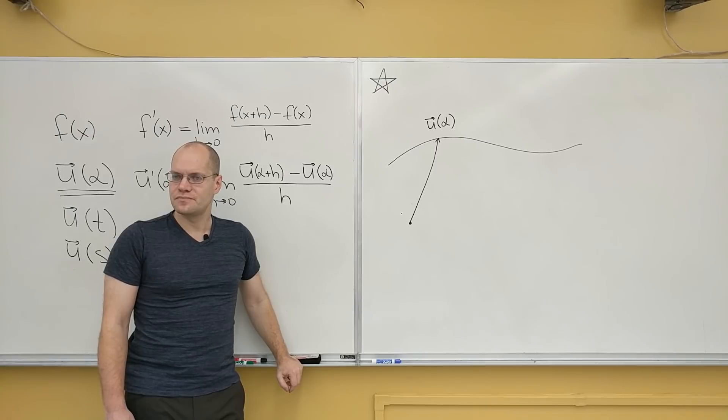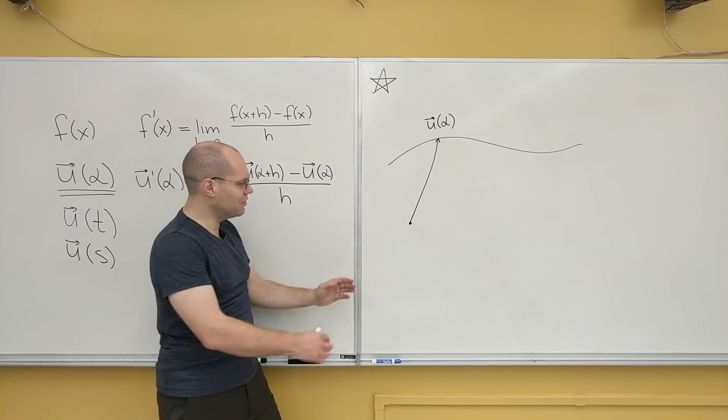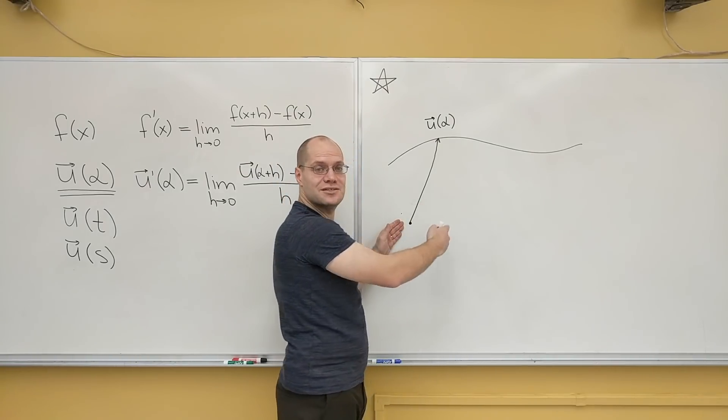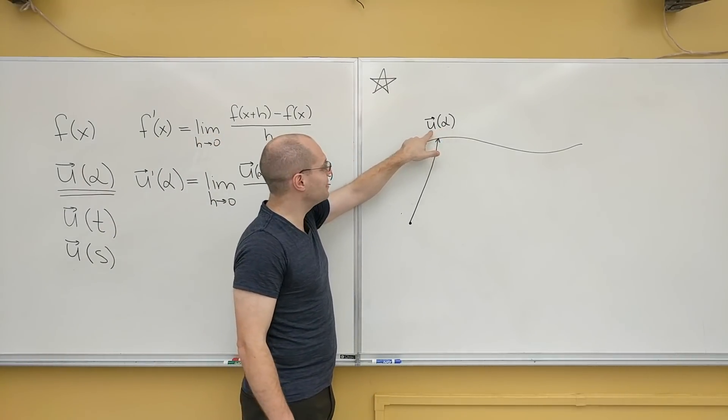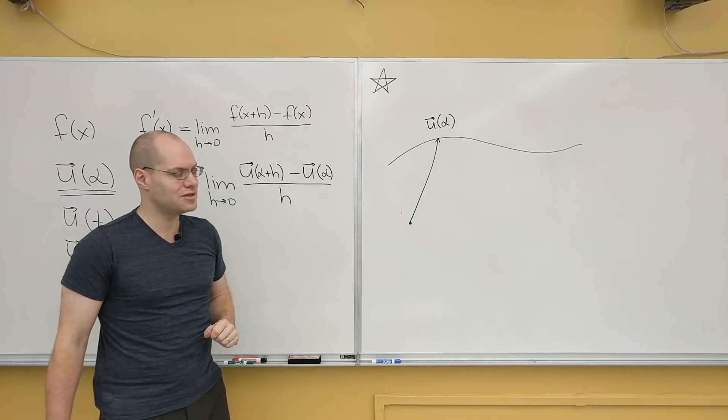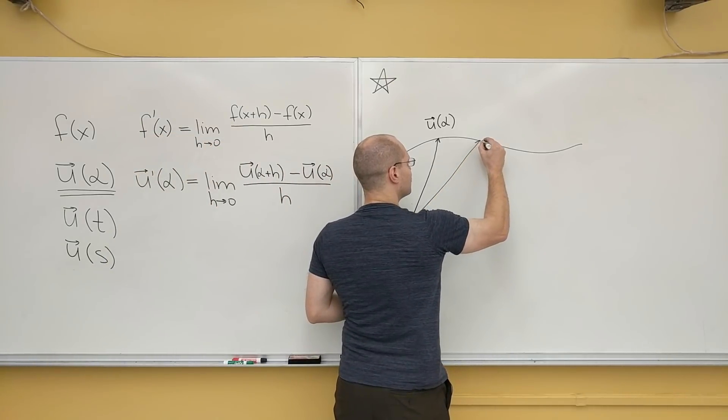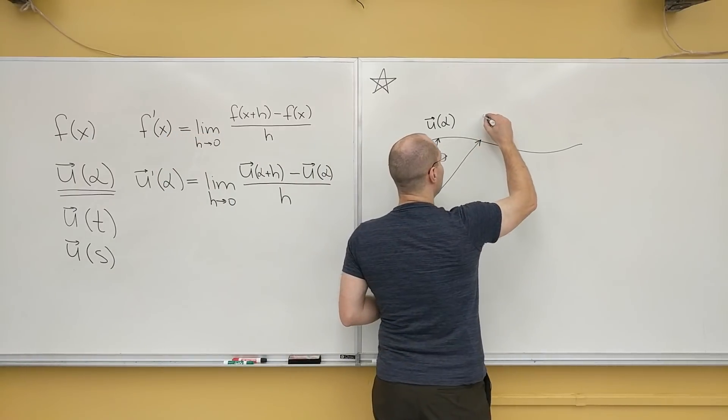Position vector, also known as the radius vector. Can you kind of see why it's called the radius vector? Because all of these guys radiate from the single point. So here I chose a particular value of the parameter, and here is the vector u that corresponds to it. I will now choose a nearby parameter. And I will call this u of alpha plus h.